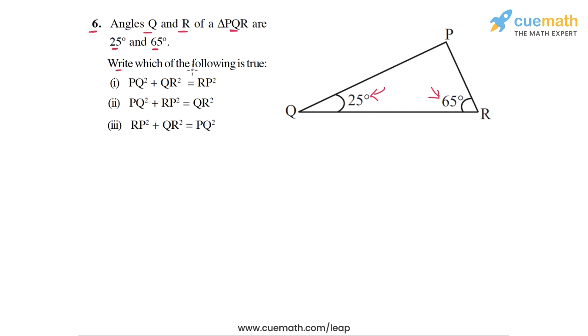And then we have to find out which of the following relationships is true. So to answer this question, what we will do is we will first find the angle at P. So we will find what angle is made at P. And to do this, we can apply the angle sum property to triangle PQR. So let's start by doing this.